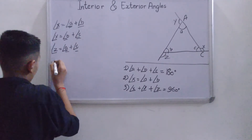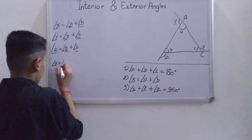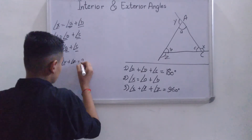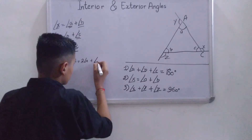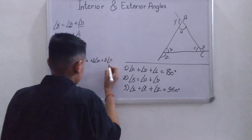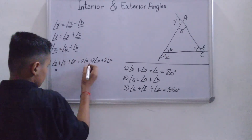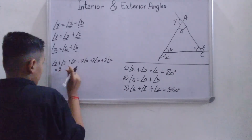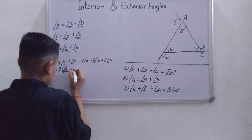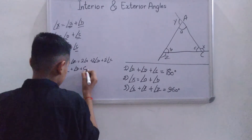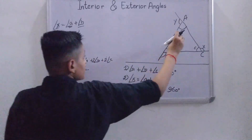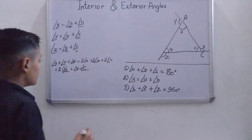So Angle X plus Angle Y plus Angle Z is equal to two times Angle A plus two times Angle B plus two times Angle C. We can take 2 as a common factor, giving us 2 times the quantity Angle A plus Angle B plus Angle C.